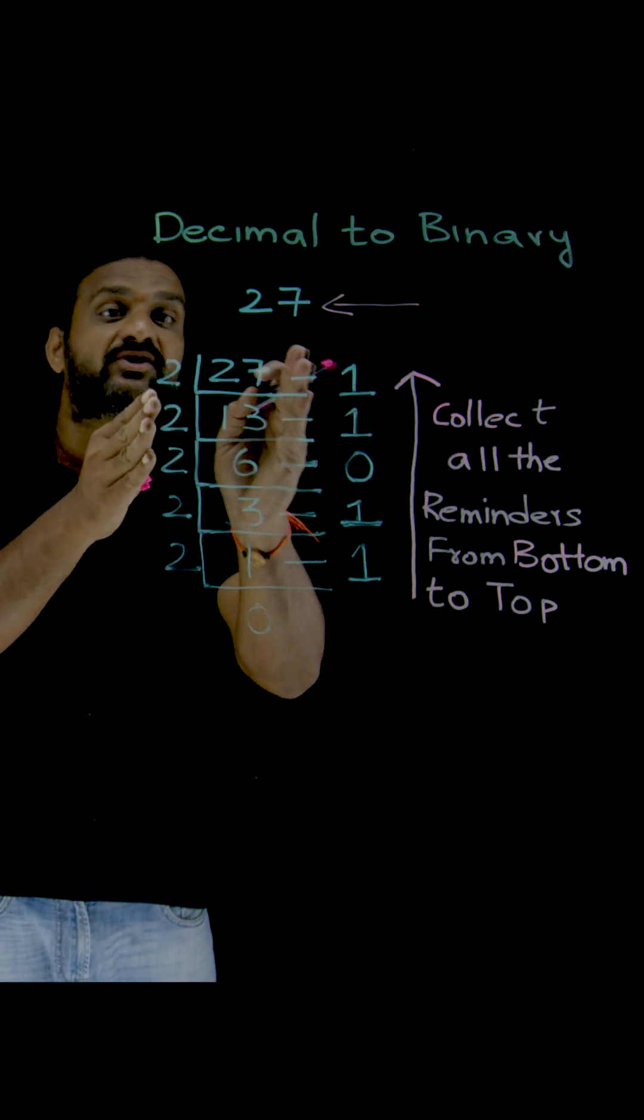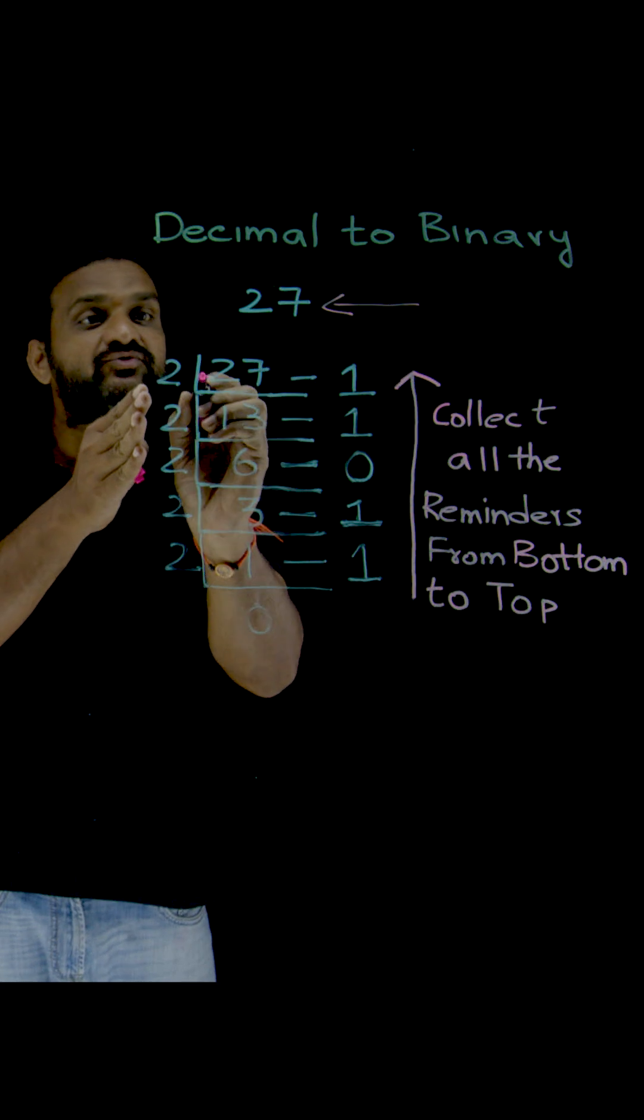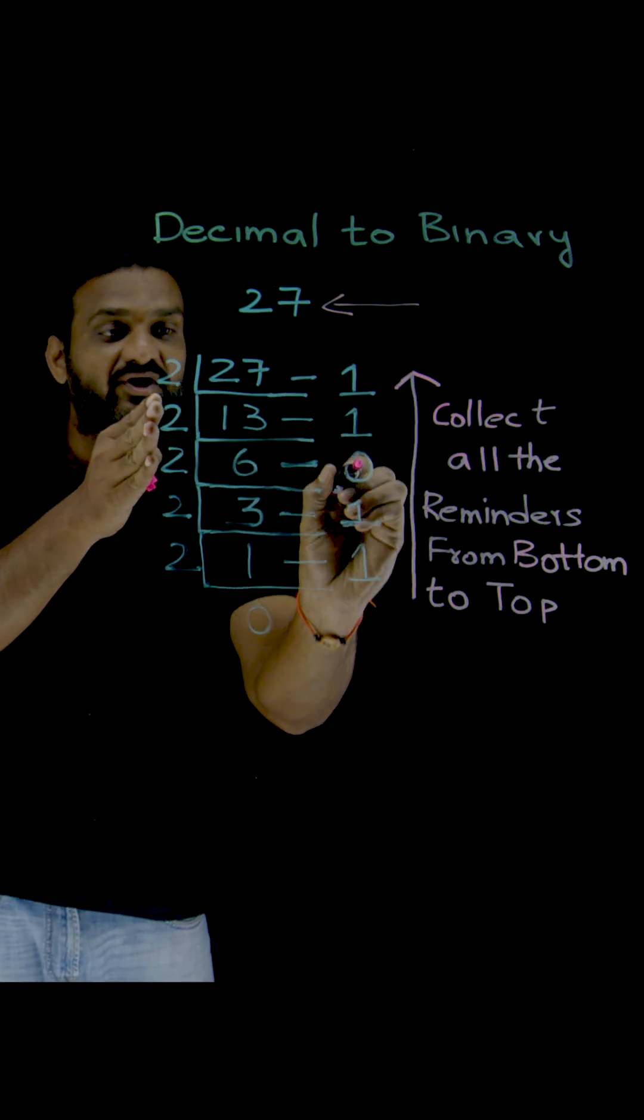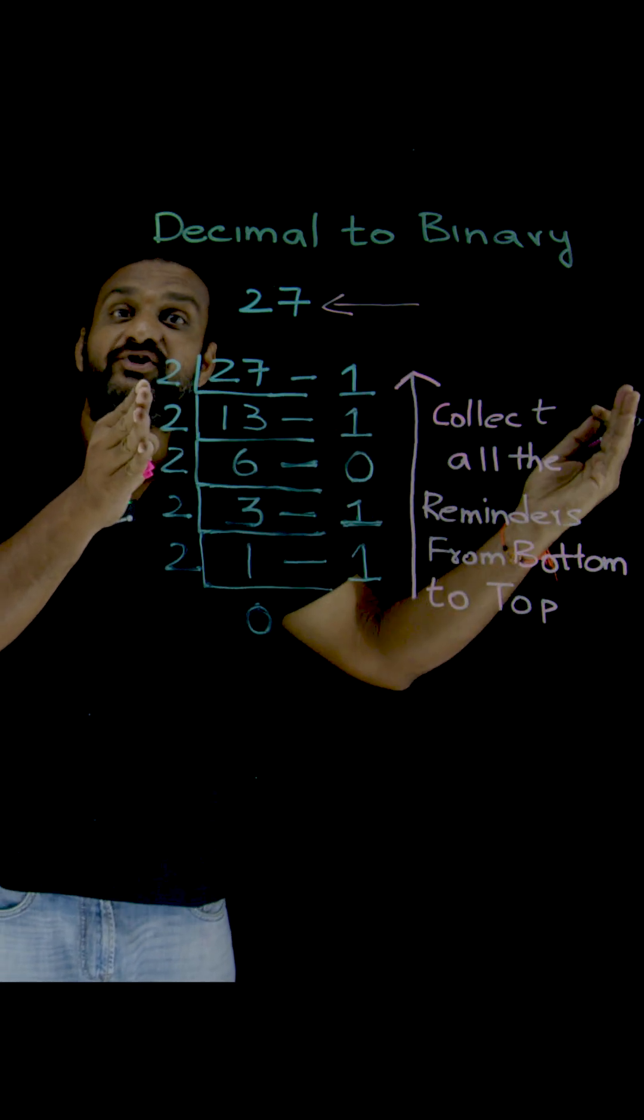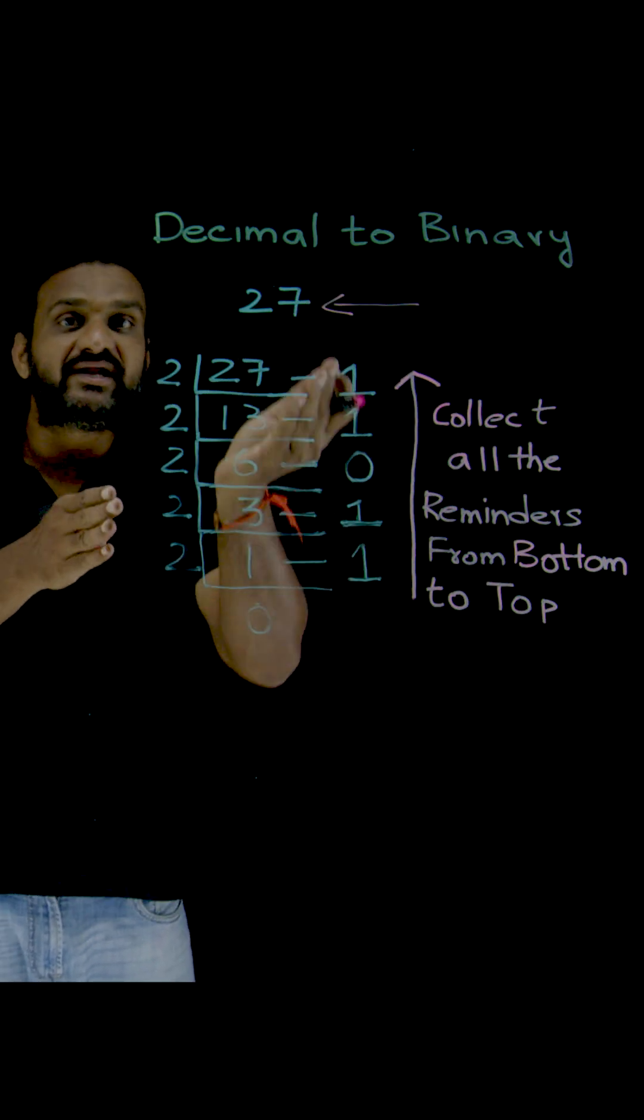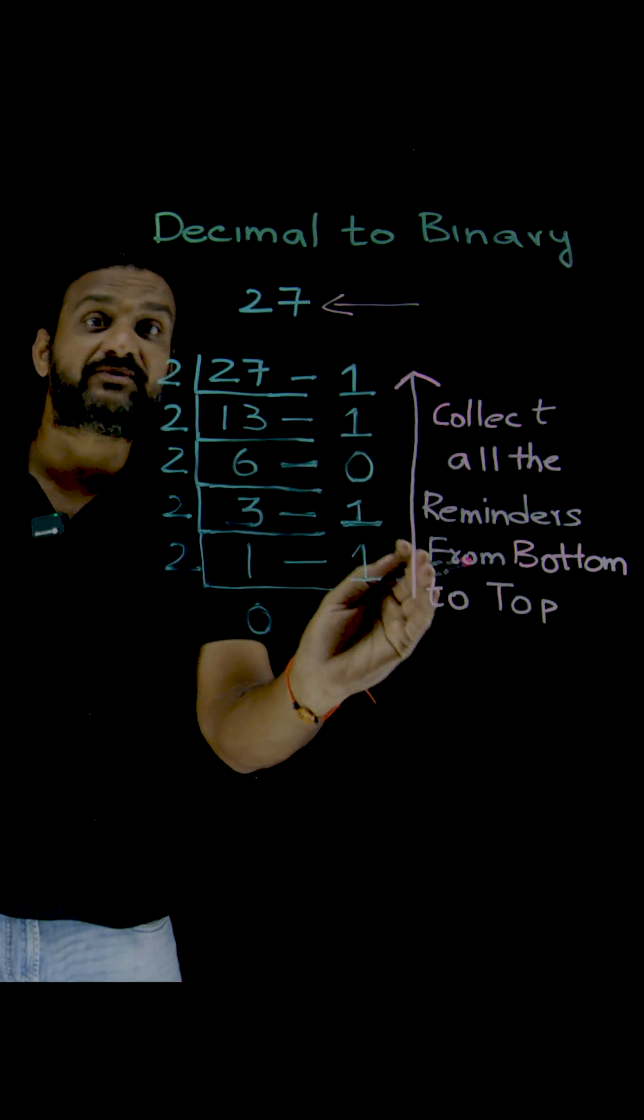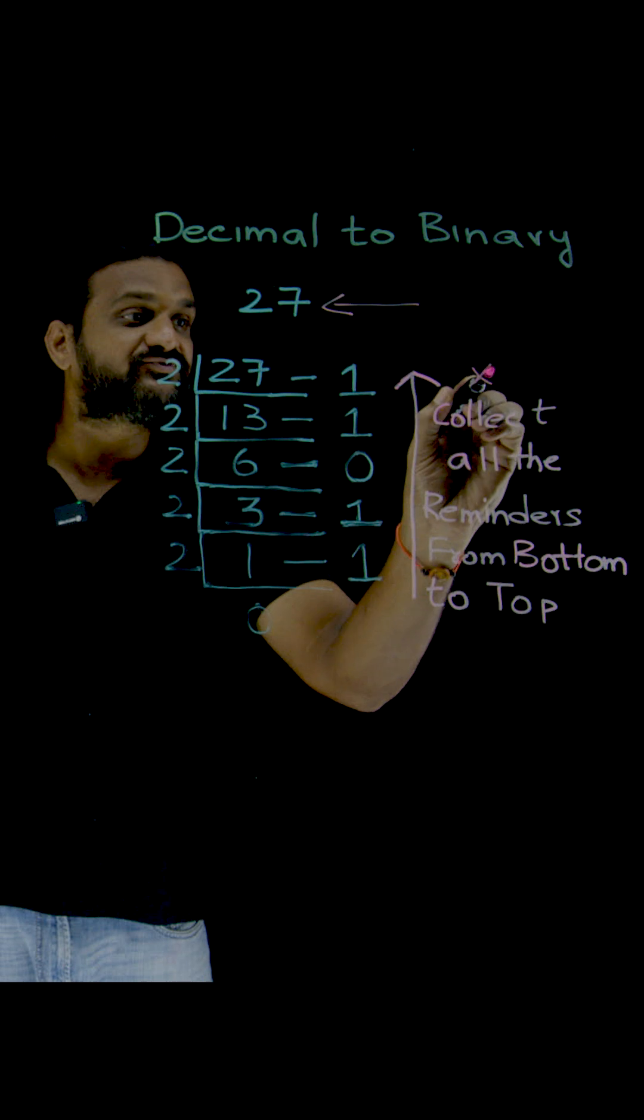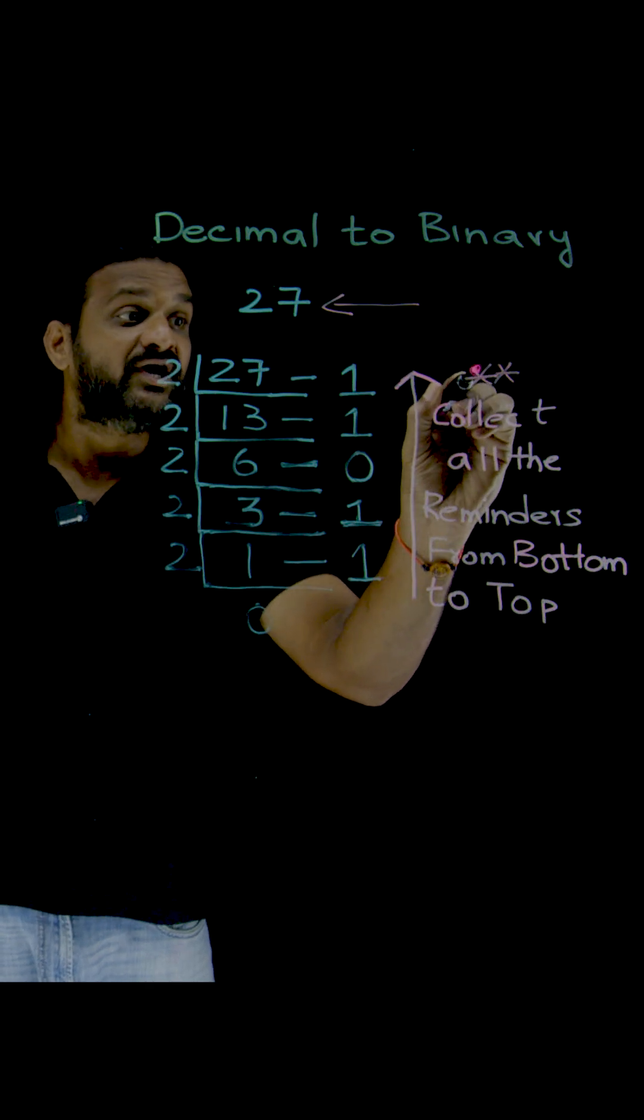We have to make a note of the remainder of every division. These are all the remainders, and at last what we have to do is collect all these remainders from bottom to top. This point is very important.